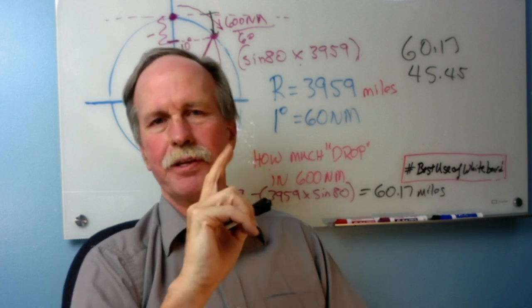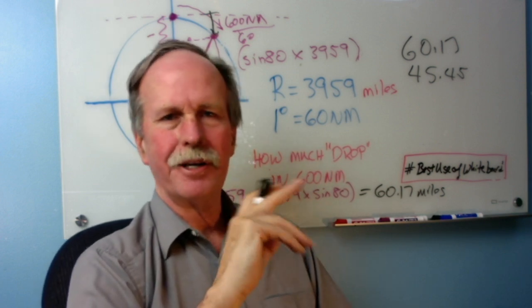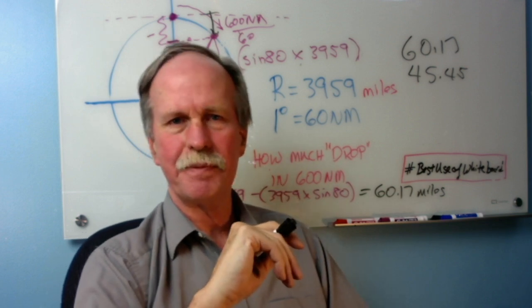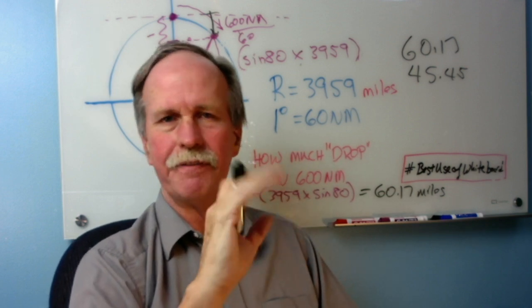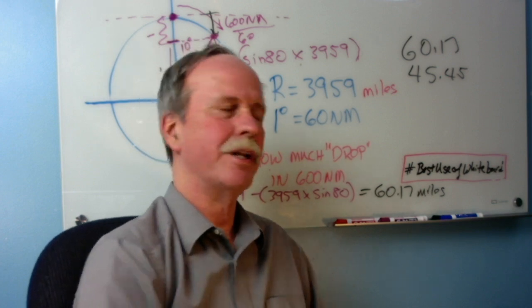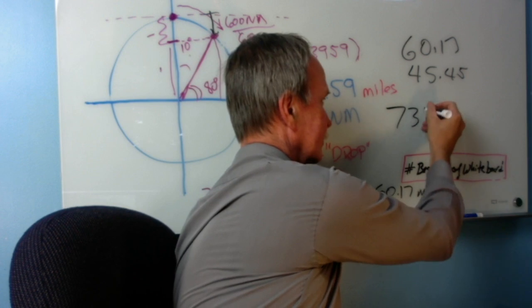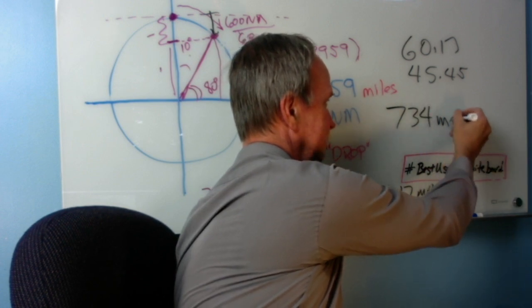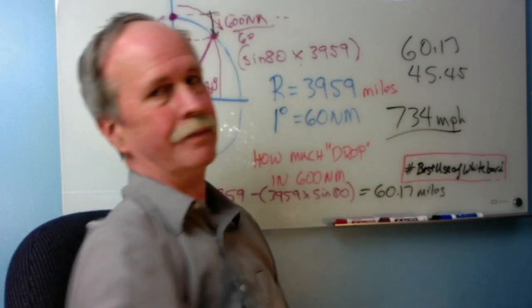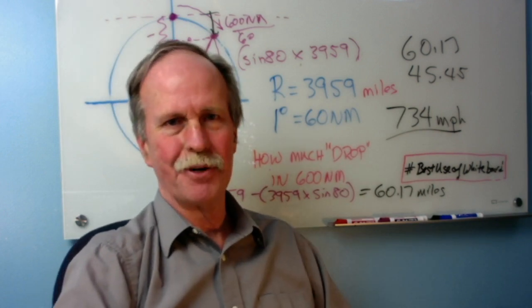By the way, for those of you following along and curious what the rotational speed of the earth at 45 degrees north is, if you want to check your answers, here it is. It's just shy of 734 miles per hour.